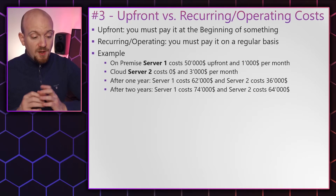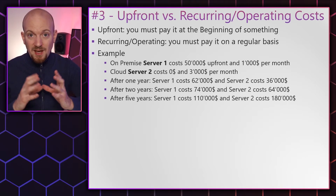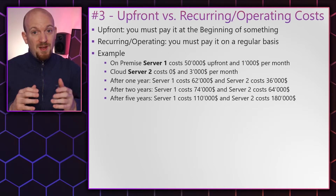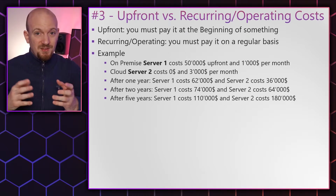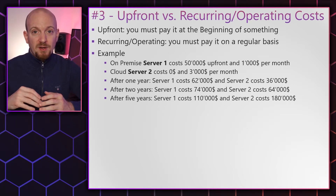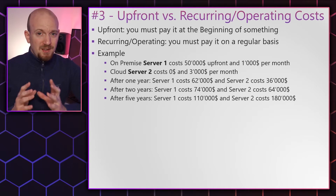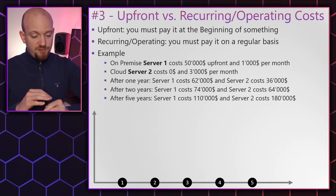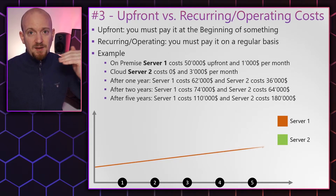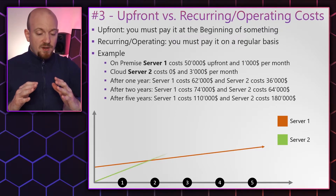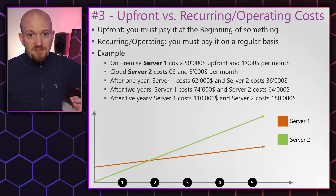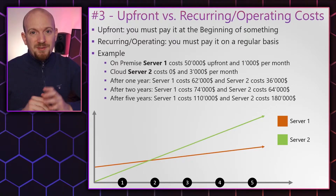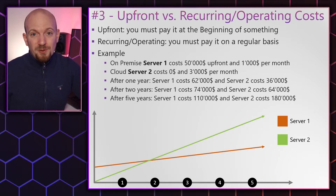After five years the first server would cost $110,000 in total, but the second server would be at $180,000. So depending on how long you operate the system, the one with higher operating or recurring costs gets more expensive in the long run. Here's a quick diagram to visualize this. The curve of server one starts a little higher but is rather flat, while server two starts at zero but is rather steep, and somewhere in the middle there's a crossing point — we'll get to that shortly.